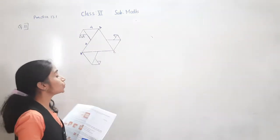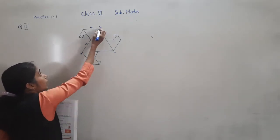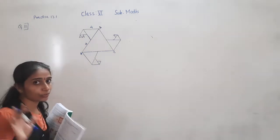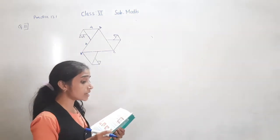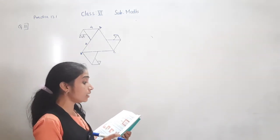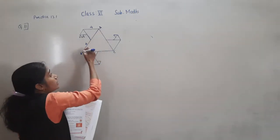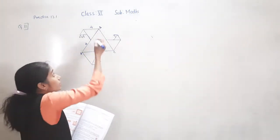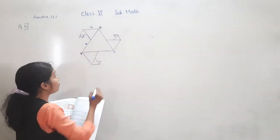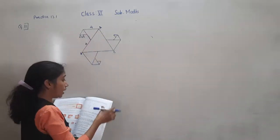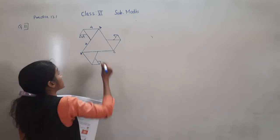AB is equal to 8 units — it is given as 8 units. After that, other triangles have been formed by taking the midpoints of the sides. Now suppose this triangle has been formed — other triangles have been formed by taking the midpoint of the other side.